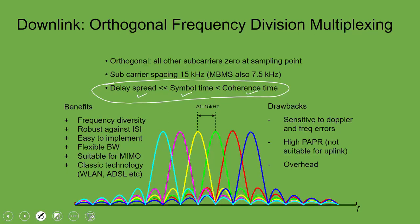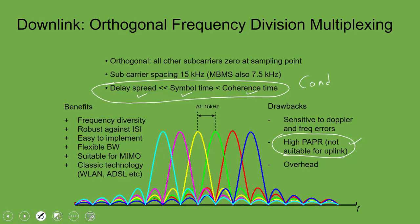OFDMA has frequency diversity advantages and is used in wireless LAN (Wi-Fi) as well as LTE. One disadvantage is high peak-to-average power ratio (PAPR). On the base station side — the downlink — high PAPR is not an issue because there is always a power generator; the advantages of OFDM outweigh this concern. However, in the uplink OFDM is not as suitable because UE devices have limited power, making high PAPR a real problem.